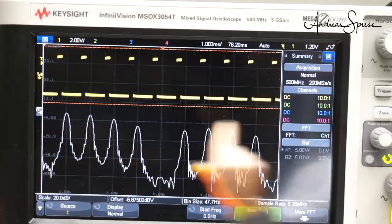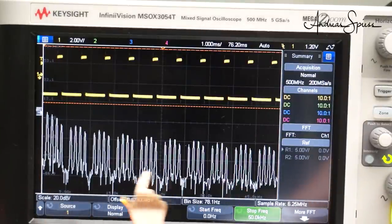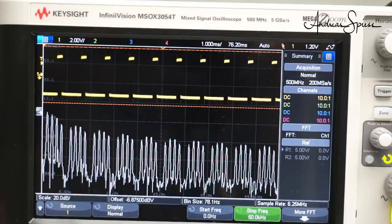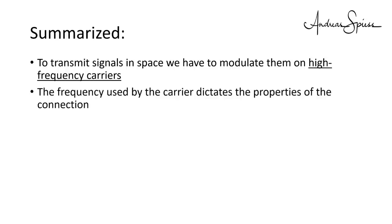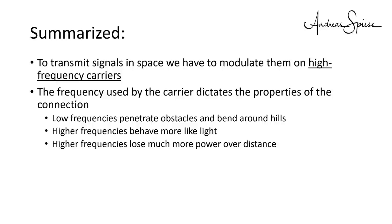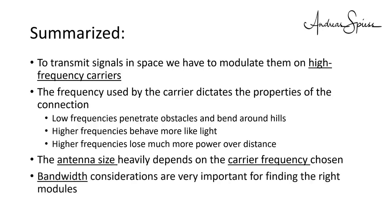How can we load these signals on the carrier frequency? These and many other questions are answered in the second part of this tutorial. To summarize: to transmit signals in space, we have to modulate them on high-frequency carriers. The frequency used by the carriers dictates the properties of the connection. Low frequencies penetrate obstacles and bend around hills; higher frequencies behave more like light and lose much more power over distance. The antenna size heavily depends on the carrier frequency chosen. We started to understand signals and their bandwidth, which is very important when we try to find the right devices.